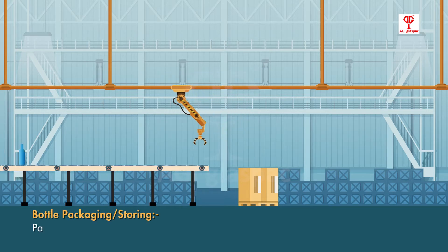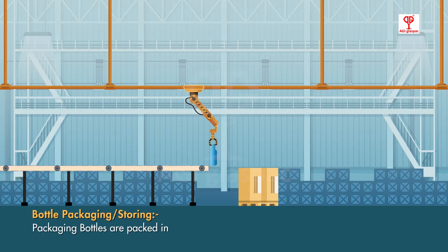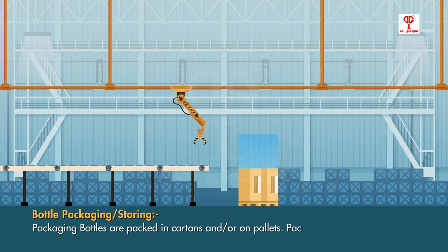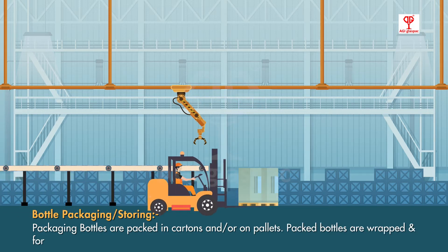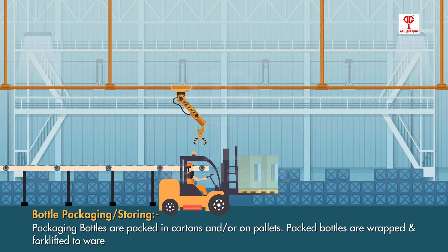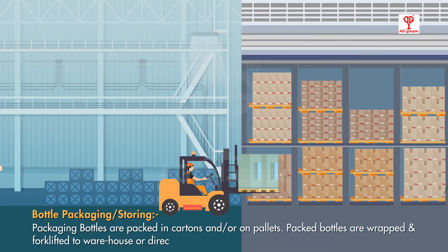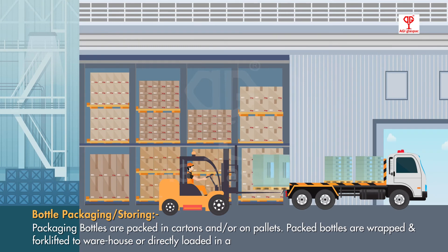Bottles are packed in cartons and/or on pallets. Packed bottles are wrapped and forklifted to the warehouse or directly loaded into a shipping container.